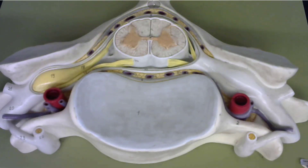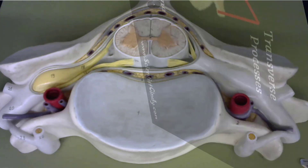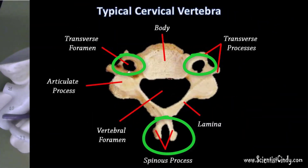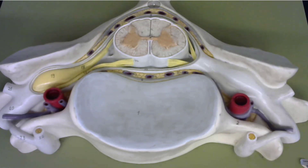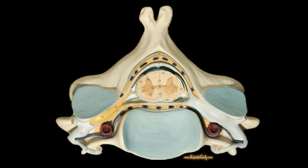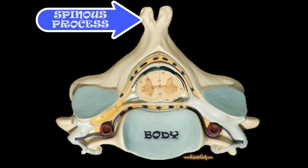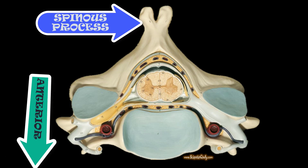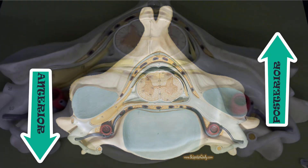Here we have the anatomical model of the spinal cord. We can see that we are at the cervical level of the spinal cord. We have the spinous process, which is bifurcated, and I also have the transverse foramina, which only occur in the cervical vertebrae. Now we can get oriented — here I have the body and this is the spinous process, so this tells me that this is the anterior direction and this is the posterior direction.